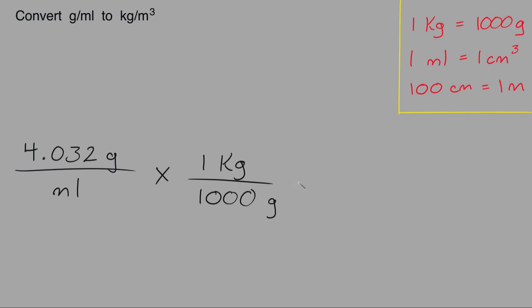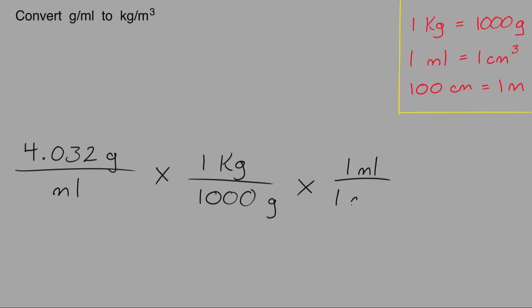The next thing I would do is multiply this by the conversion ratio of one milliliter is equal to one cubic centimeter. I'll place the unit of milliliters on the top of the fraction because I want it to cancel with this unit of milliliters on the bottom of the fraction, to convert the milliliters to cubic centimeters.